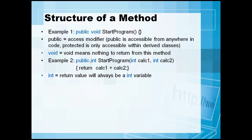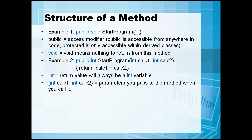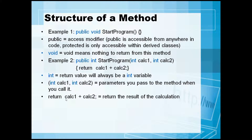'int' is the return value type — your return value goes here after the access modifier, and it can be int, string, an object, or anything else. The parameters you pass can be multiple. I would suggest that if you have 10, 20, or 30 parameters, something is wrong with your design — you should pass an object instead. In this case we are passing two parameters: calc1 and calc2. The return value will return the result of that calculation.